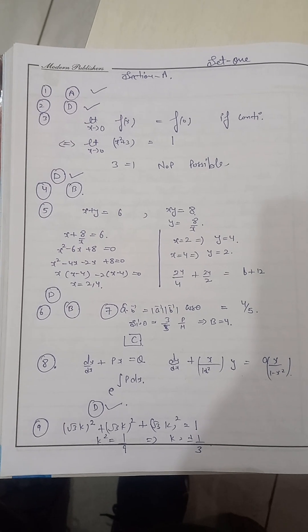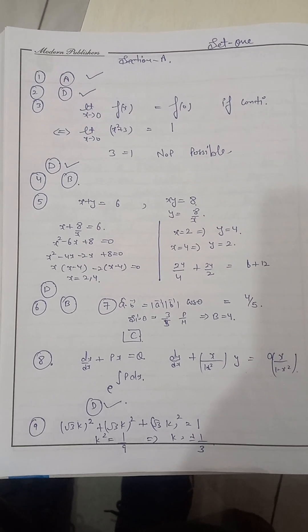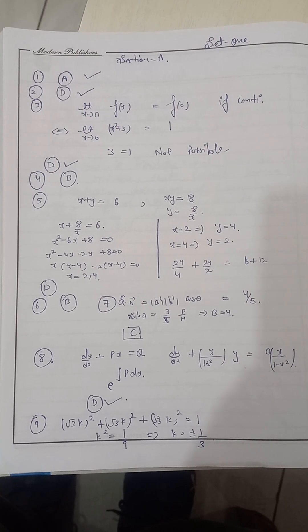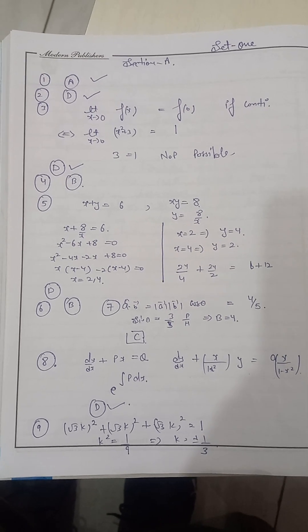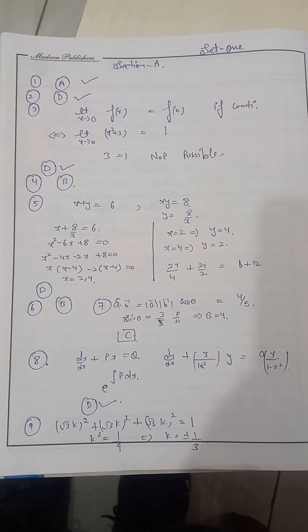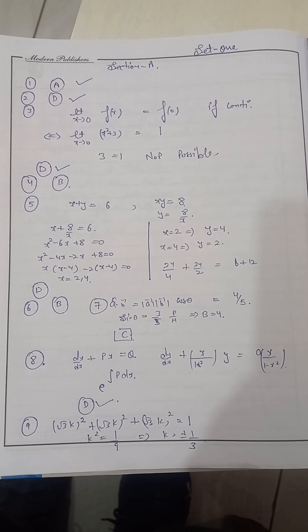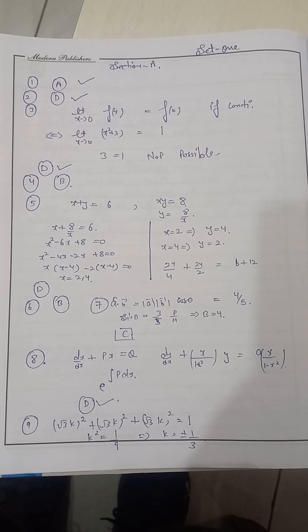So let us see the proper answer key of your set 1. First we will start from section A. Question number 1, option A is the right answer. Question number 2 you can see on this page, option D is the right answer. Question number 3 again D, 4th question B, 5th question with solution D option.